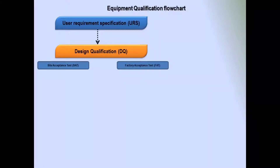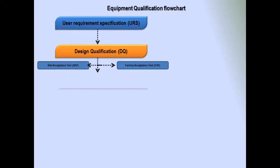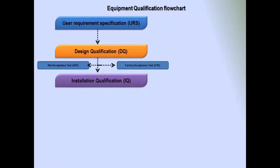Following DQ is the Factory Assessment Test (FAT), which is done at the factory, and the Site Assessment Test, which is done at the site. The next step after FAT and Site Assessment is Installation Qualification (IQ).